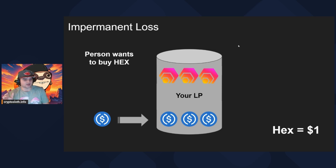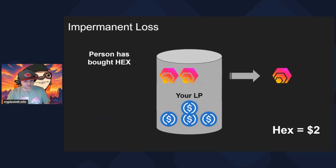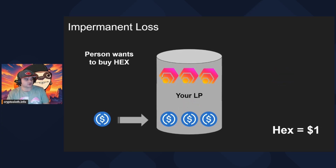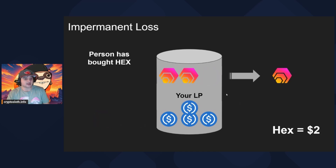Let's go to our original example. We have a liquidity position with three HEX tokens and three USDC tokens. HEX is at $1. Somebody wants to buy HEX — they put USDC into the pool and get HEX out. So a person has purchased HEX and HEX has gone up to $2. Originally they had three HEX tokens and three USDC tokens; now they have less HEX tokens and more USDC tokens, but the price of HEX has increased. Let's calculate the impermanent loss for this specific example.